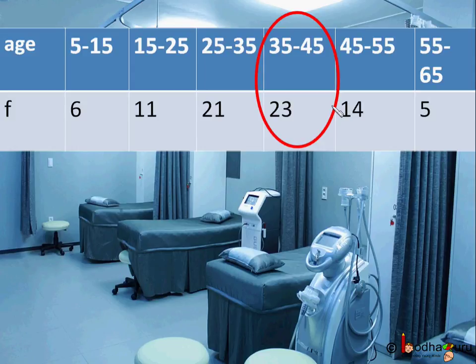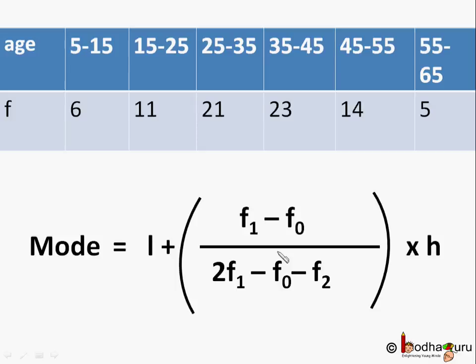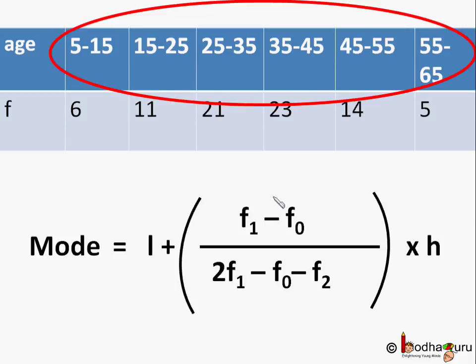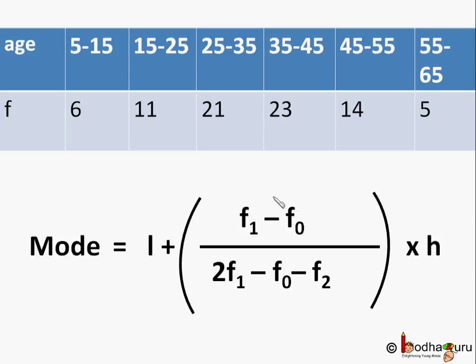L equals 35, the lower limit of the modal class. H equals the class size, which is 10. Each age group range is 10: 5 to 15, 15 to 25, and so on.